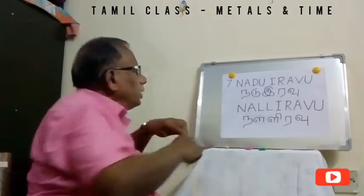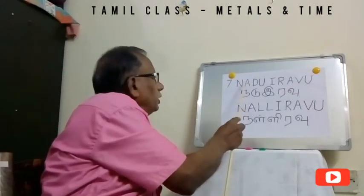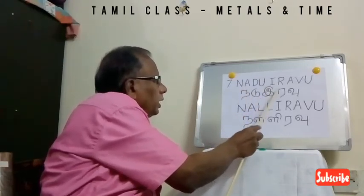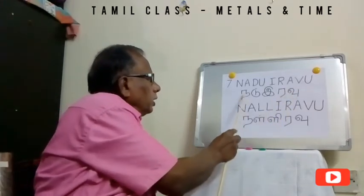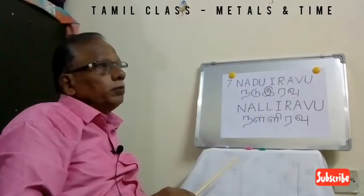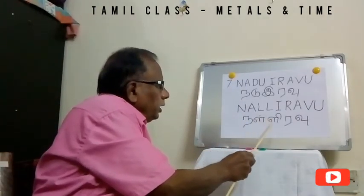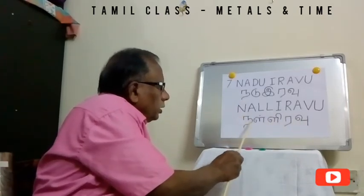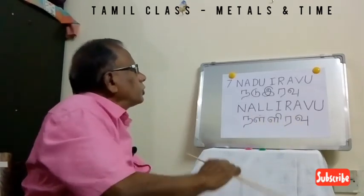The seventh one is midnight. In Tamil we say Nullirabu. Nadu means middle, Irabu means night — so Nullirabu is midnight. It is also called Nullirabu.